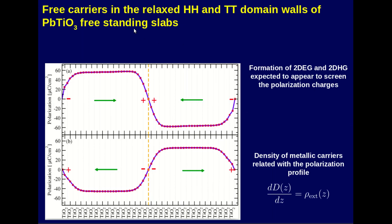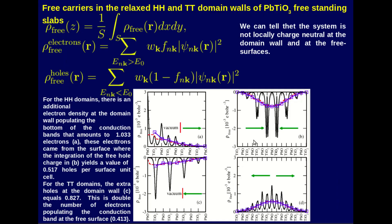To characterize the free carriers, the density of metallic carriers is related to the polarization profile through a specific equation. We plot the plane-averaged value of the free charge, where the black line is the plane average, the red dashed line is the nano-smooth average, and the blue corresponds to the profile magnitude of the bound charge. From this, the head-to-head domain wall has an electron density of 1.03 electrons per unit cell, and the tail-to-tail has a hole density of 0.82 per unit cell.